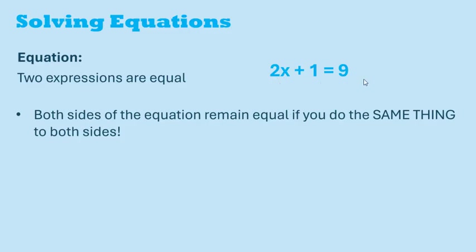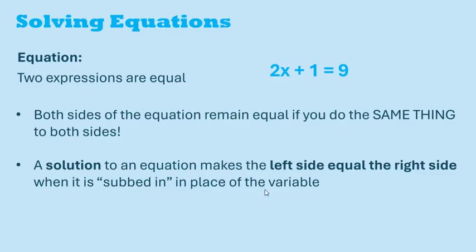For example, you could add 100 to both sides and they would still be equal. A solution to an equation makes the left side equal the right side when you sub in that number in place of the variable. There could be multiple, one, or no solutions to an equation.